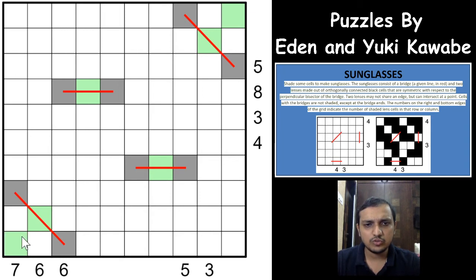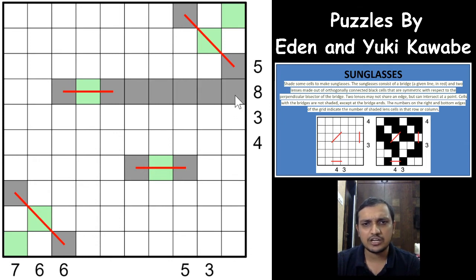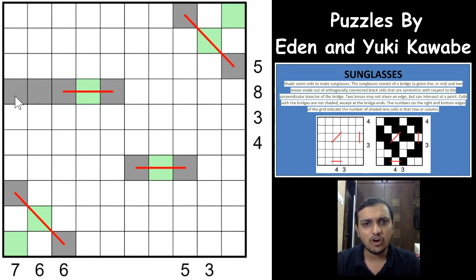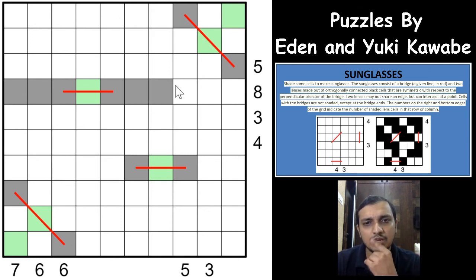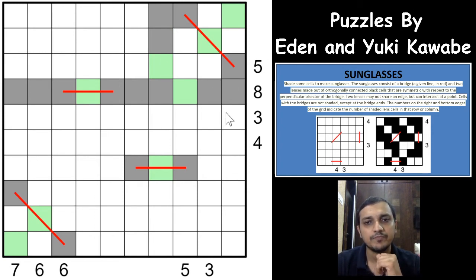Looking at the 8 clue — all 5 cells here cannot all be shaded because both of those lenses would be touching each other. So there will be one unshaded cell in these 5 cells. Since it's a 10×10 grid with 10 cells per row, and one cell is already unshaded, the other unshaded cell must be in these 5 cells — so all other cells must be shaded. This forces two specific cells to be shaded and unshades another cell because the lens cannot extend in that direction. The 8 is now fulfilled.